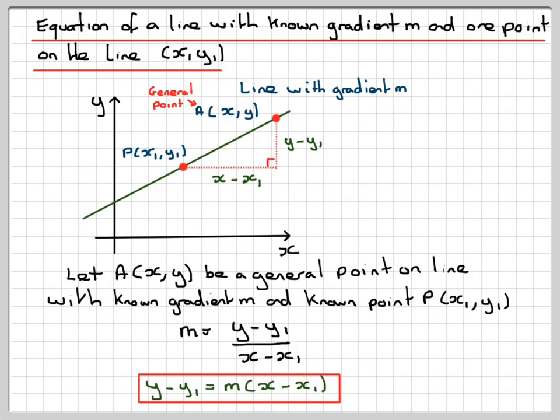If we rearrange that, we get a well-known formula, which is y minus y1 is equal to m brackets x minus x1.